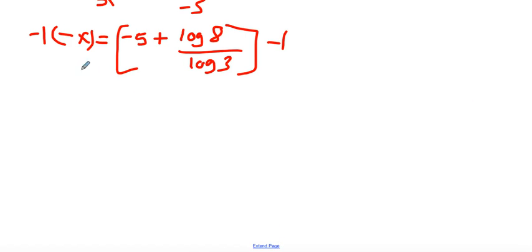Alright. And so when we do that, then we have x equals... So negative 1 times negative 5 is a positive 5. Negative 1 times a positive is going to make that negative. So now it's negative log of 8 all over log of 3. Pretty hairy number right there. And of course, that is the exact answer.